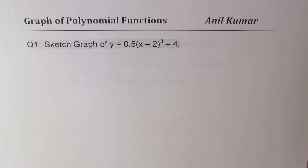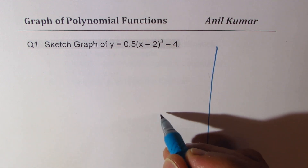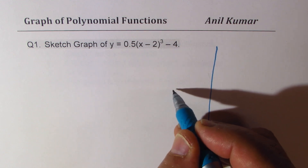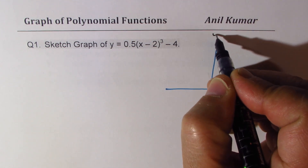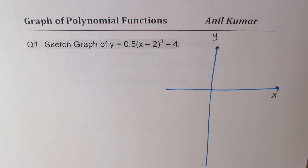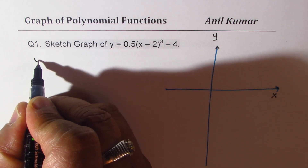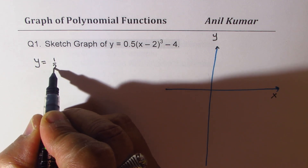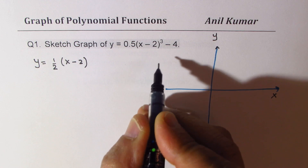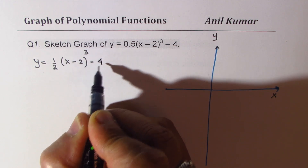Question number one: we need to sketch the graph of a cubic function which has been transformed. So I'll sketch the graph here and describe the steps on the left side. Since it has moved four units down, I'll keep my x-axis slightly above. What we have here is a function which is vertically compressed by a factor of half — 0.5 is kind of half. So we have x minus 2 to the power of cube, so its basic function is a cubic function, translated two units right and four units down.